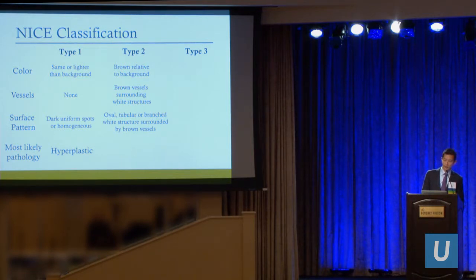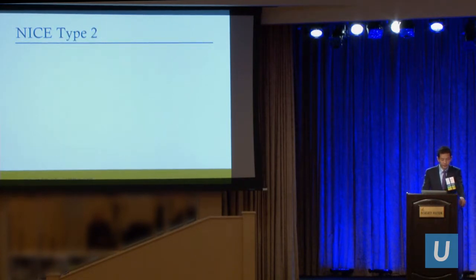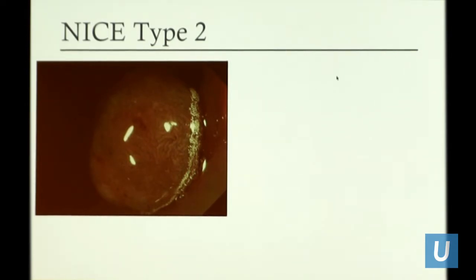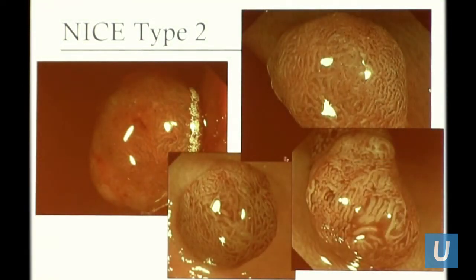Type 2: the polyp color is brown relative to the background, darker. There are brown vessels surrounding white structures. The surface pattern shows oval or tubular branched white structures surrounded by brown vessels — this is an adenoma. Here's a polyp in white light, then narrowband imaging showing that surface pattern — you can appreciate the organized tubular structures, sometimes looking like a little brain. It's darker than the surrounding area, and you can see the overlying surface pattern consistent with an adenoma.